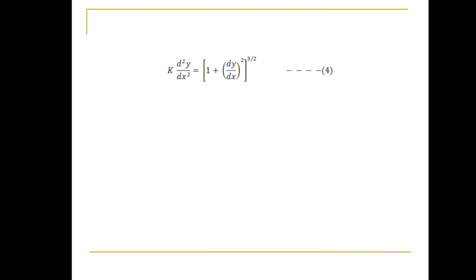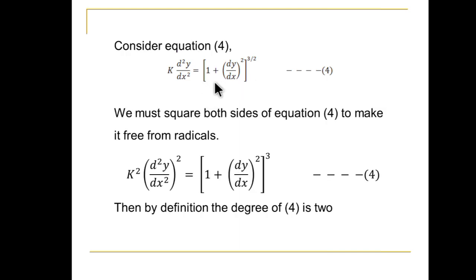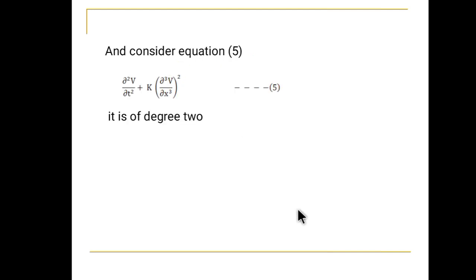Next, consider equation 4: this is not free from radicals. To make it free from radicals we square both sides of equation 4. After squaring, the highest derivative has an index of 2, so its degree is 2. For equation 5, the power of the highest derivative is 2, so the degree is 2.